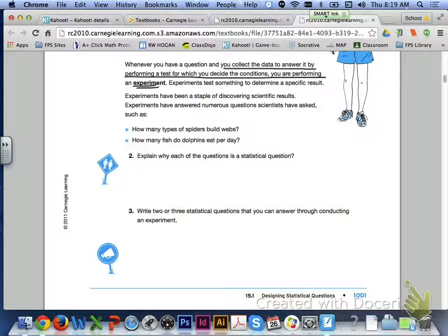Whenever you have a question and you collect the data to answer it by performing a test for which you decide the conditions, you are performing an experiment. Experiments test something to determine a specific result. Experiments have been a staple of discovering scientific results. Experiments have answered numerous questions scientists have asked, such as how many types of spiders build webs or how many fish do dolphins eat per day.